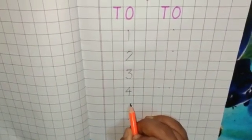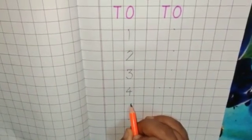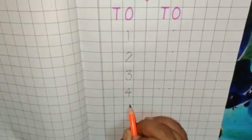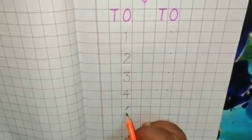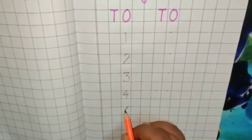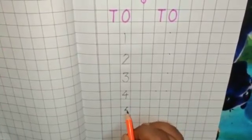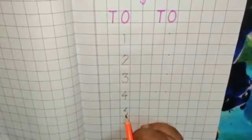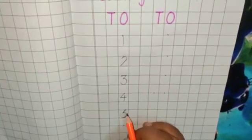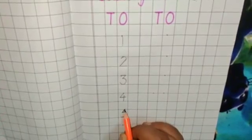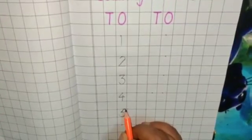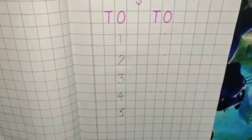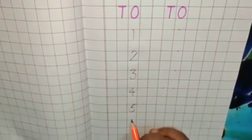For number 5. We will keep pencil on the dot and make a slanting line like this. Then we will make a curve like this. Very nice. Then again keep your pencil ready on the dot and make a small slipping line like this. This is number 5.